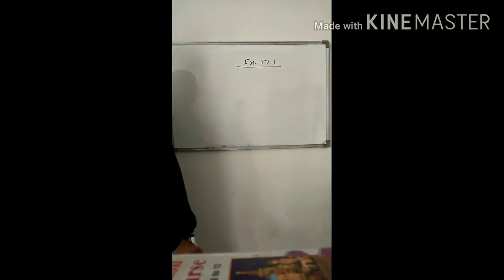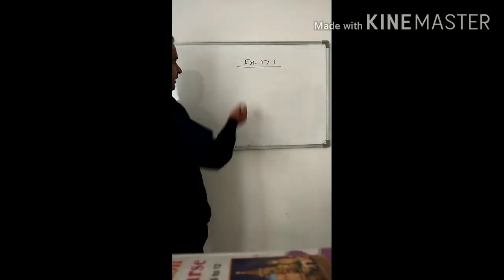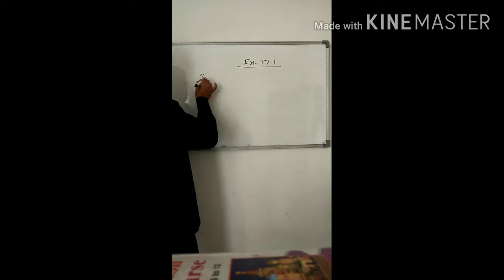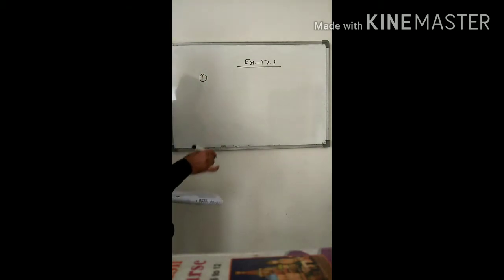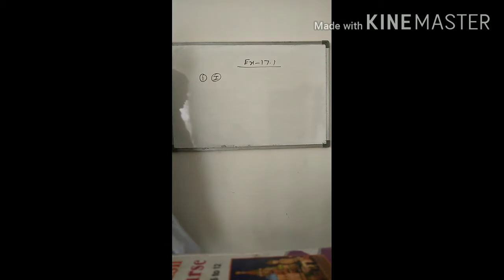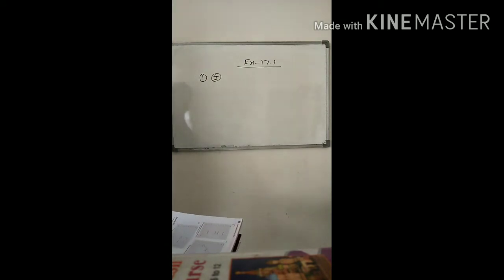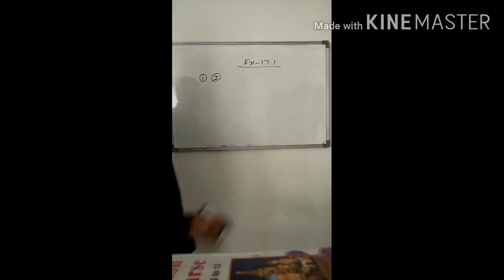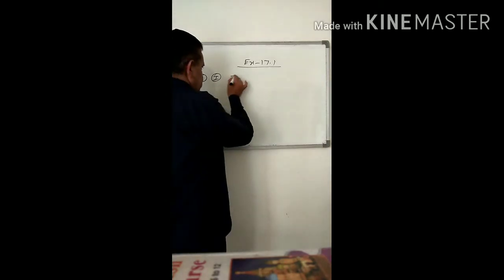Hello students, now look, exercise 17.1 Question number 1. 1st part: The point whose x-coordinate is 0 and y-coordinate is non-zero will lie on the y-axis. This is true.